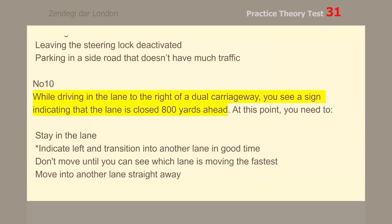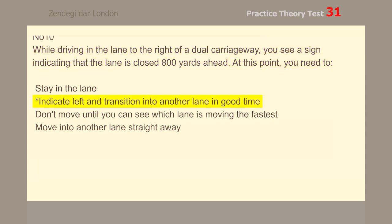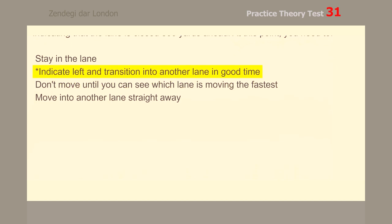Number 10. While driving in the lane to the right of a dual carriageway, you see a sign indicating that the lane is closed 800 yards ahead. At this point, you need to indicate left and transition into another lane in good time.